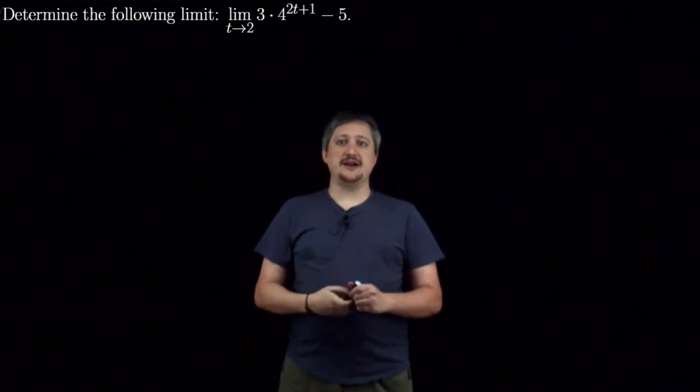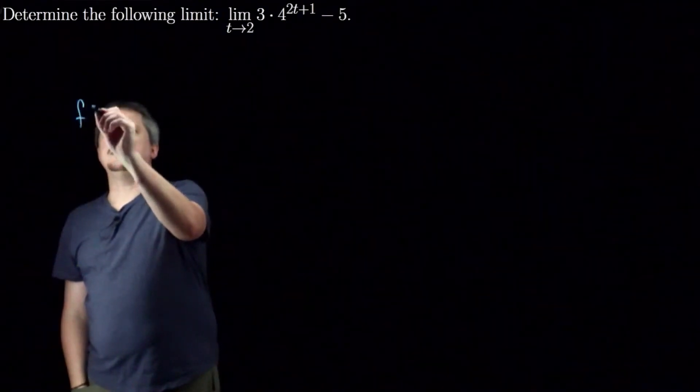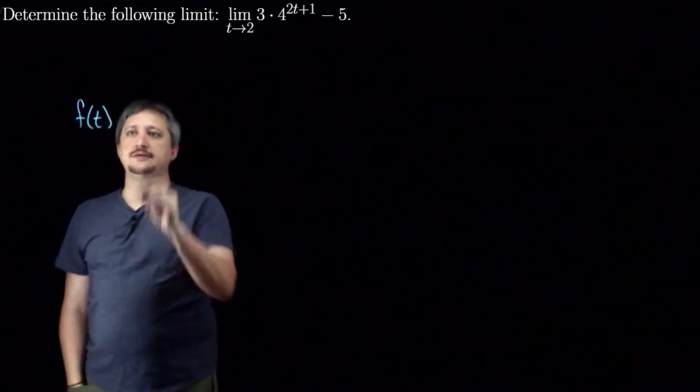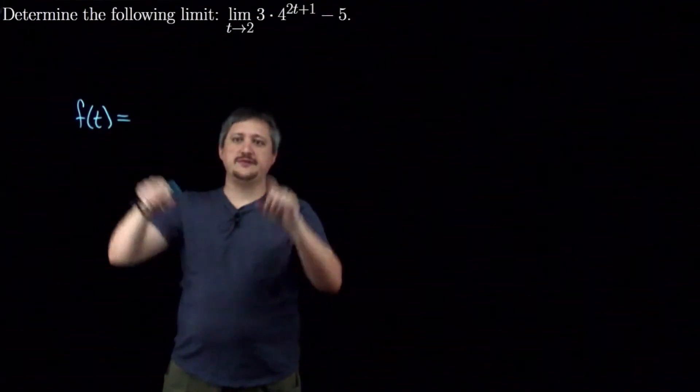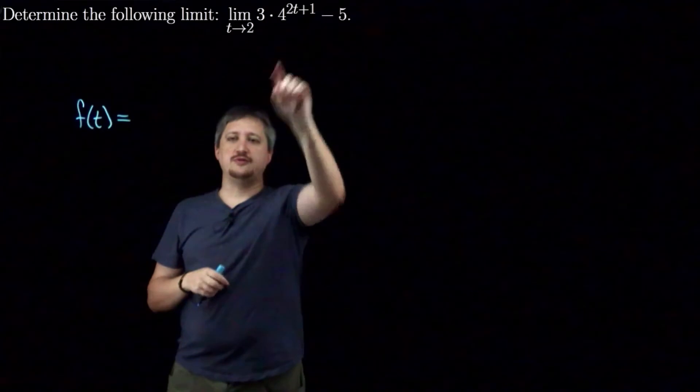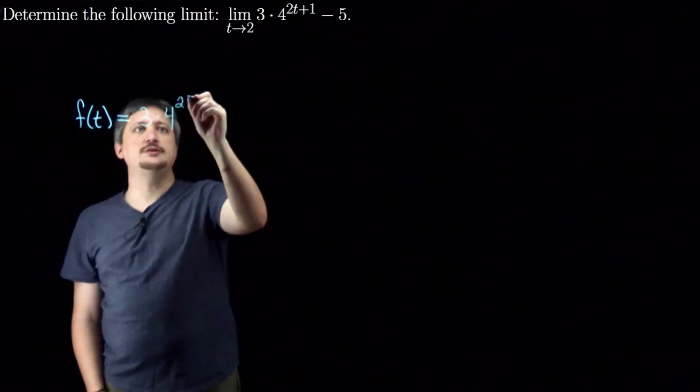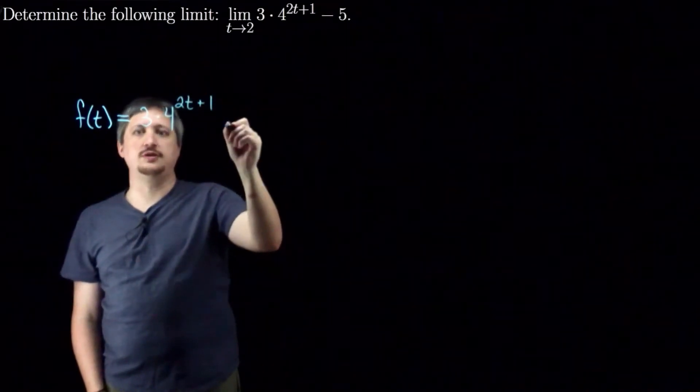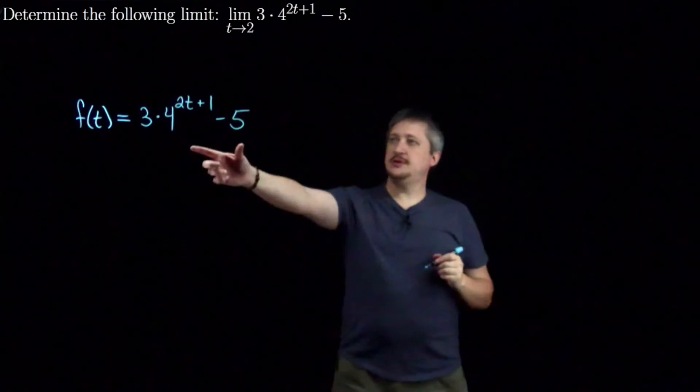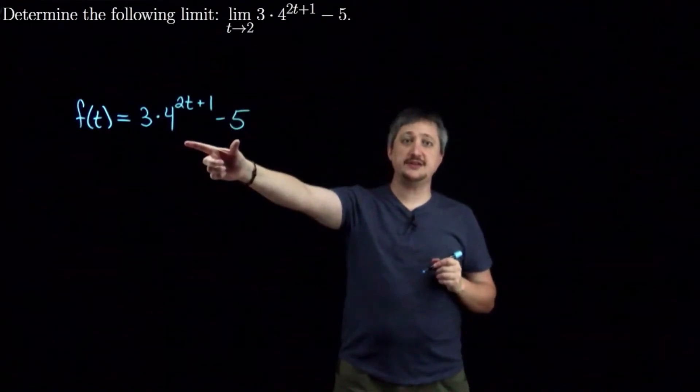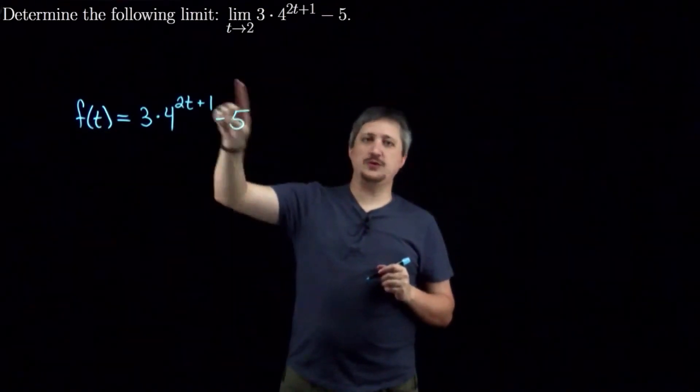So again, we can think of this as the limit of a function. So I'm going to start by writing out what that function is. So I'm going to do f of t equals. So I'm going to use, I'm going to define my f of t to be this thing I'm taking the limit of, this function here. So this is going to be 3 times 4 to the 2t plus 1 minus 5. So we have our function. This function is nice and continuous. So that means that I can take the limit as t goes to 2 of this function. And it's just going to be the equivalent of the function.